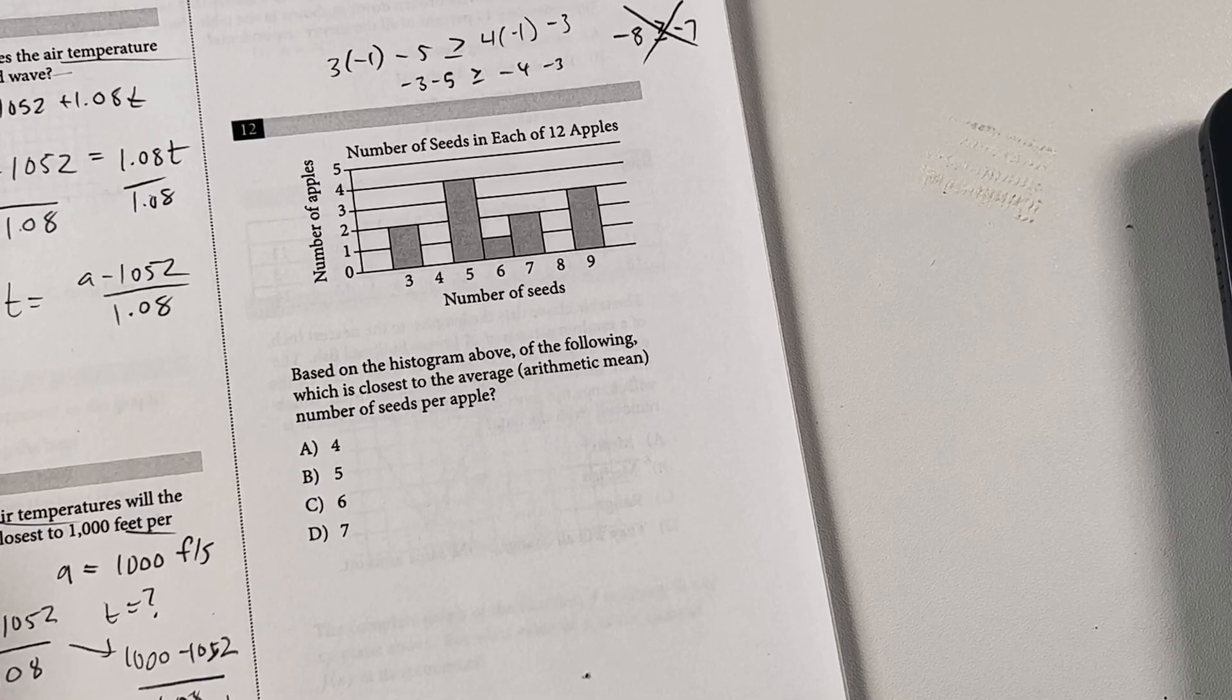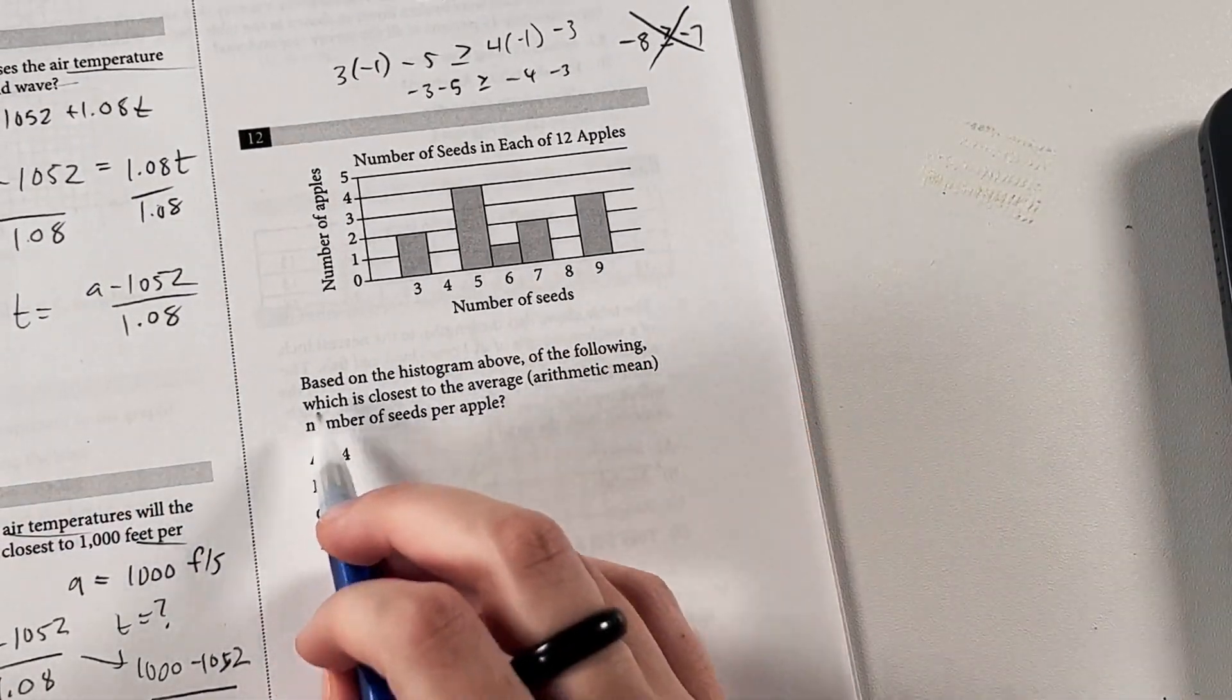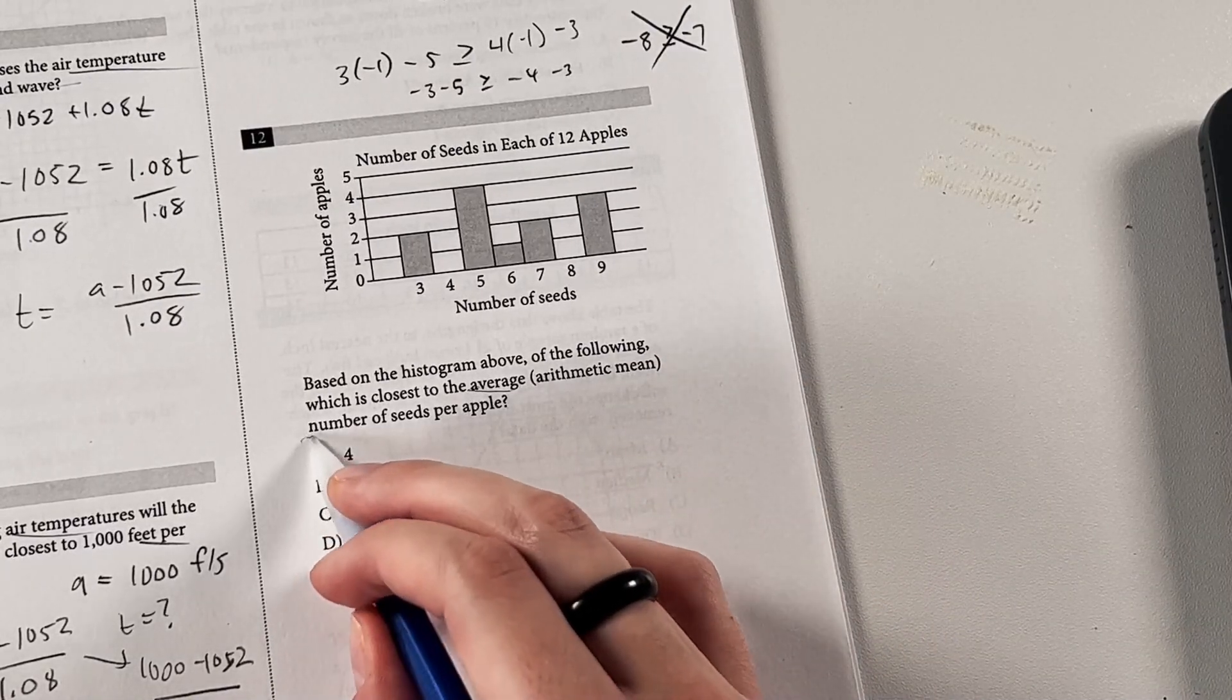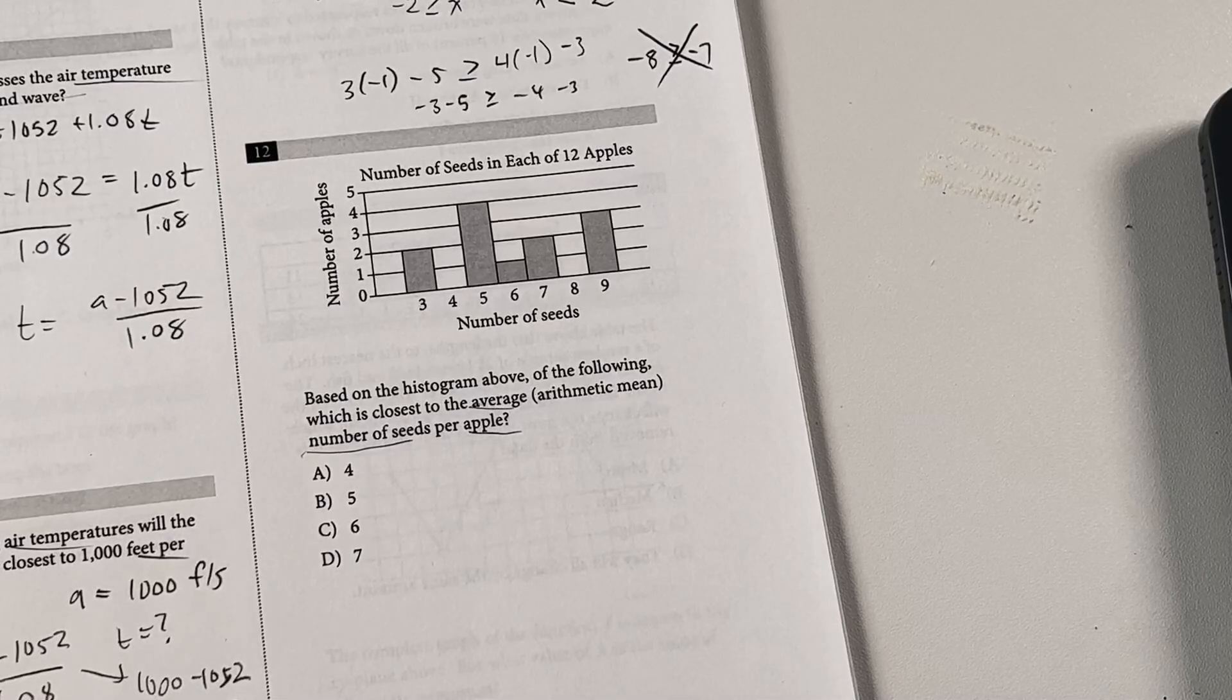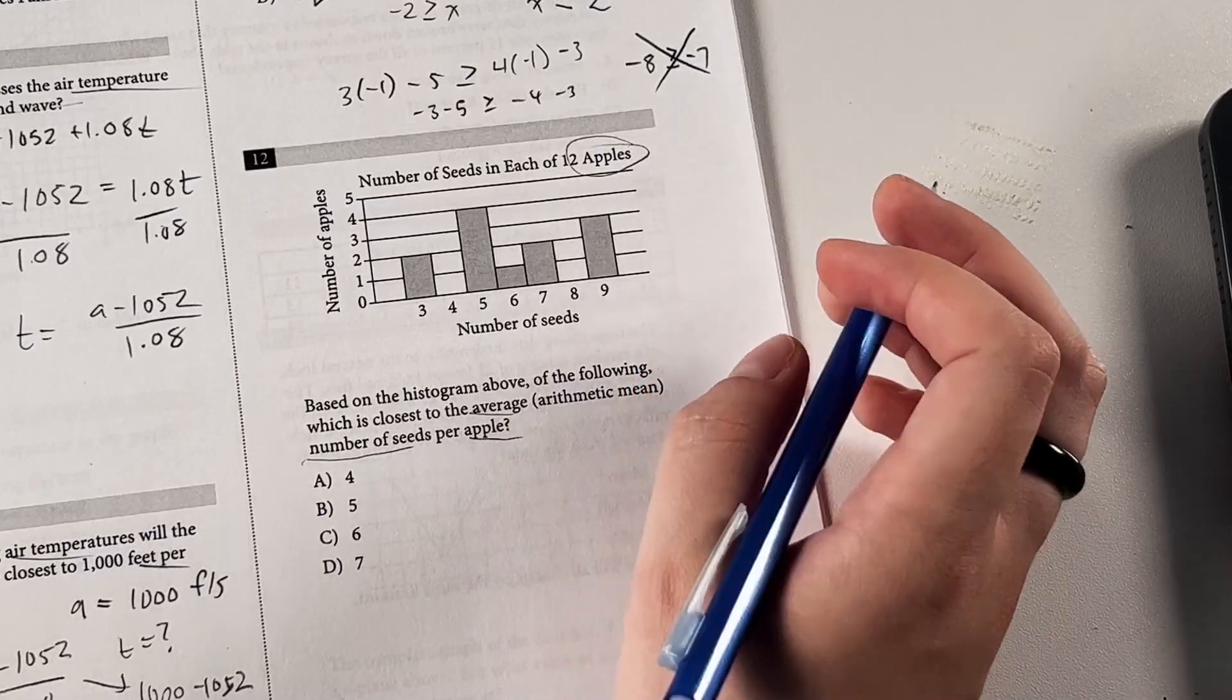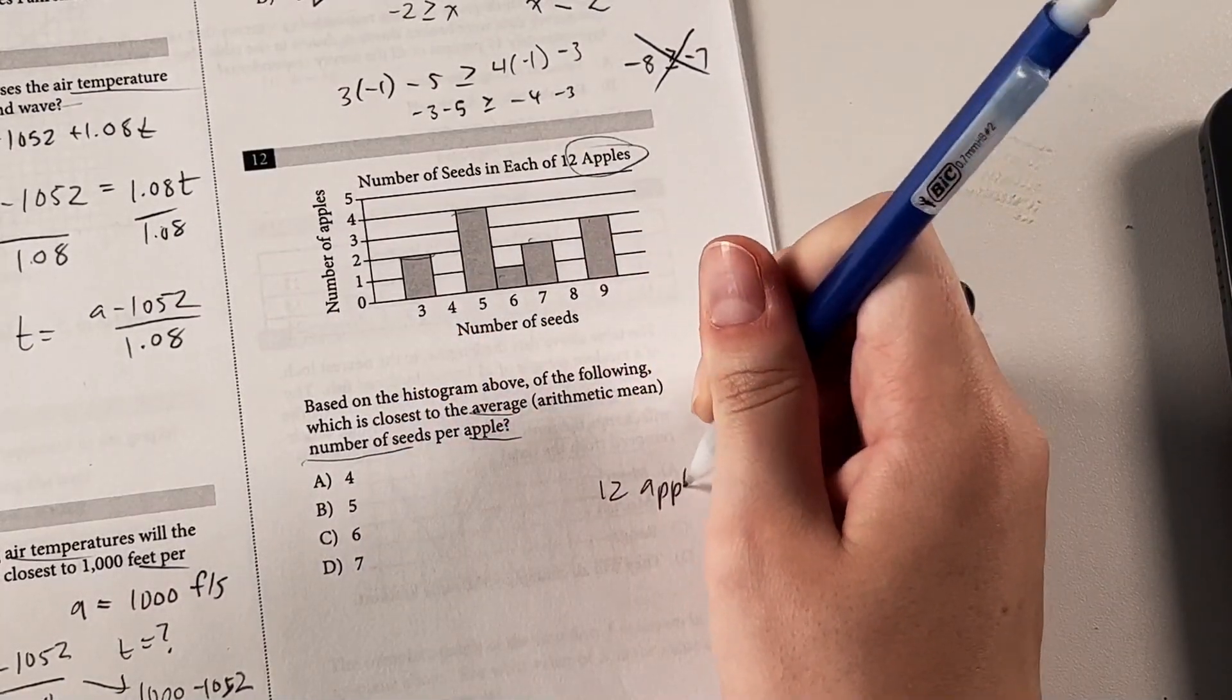So now we have another statistics problem. This one's a little weirder maybe. So based on the histogram above of the following, which is the closest to the average, or the arithmetic mean, number of seeds per apple. So note that this graph is called number of seeds in each of 12 apples. So our total number of apples here is 12. We don't have to count up all these bars. So we have 12 apples. Let's note that.